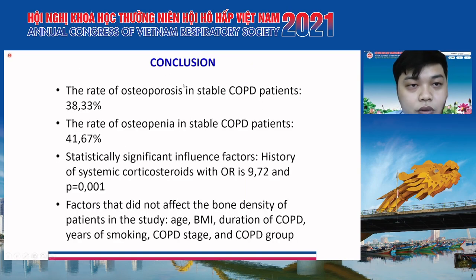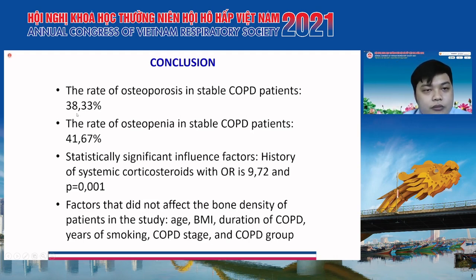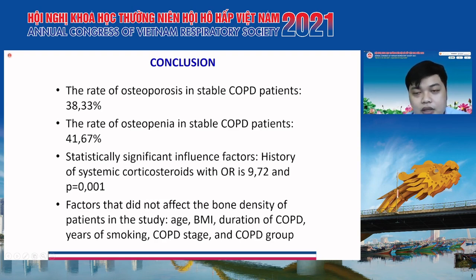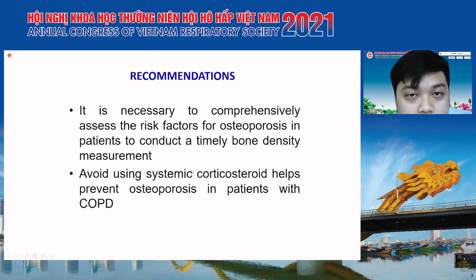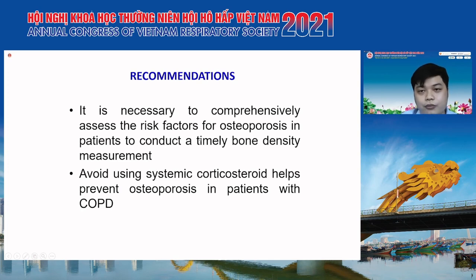In conclusion, the rate of osteoporosis in stable COPD patients is 38.3%. The only statistically significant influencing factor is history of systemic corticosteroid use. Corticosteroid use is a risk factor for osteoporosis in COPD patients. Conducting bone density measurement and avoiding systemic corticosteroid use can help prevent osteoporosis in patients with COPD.